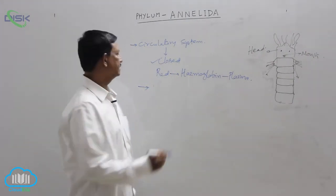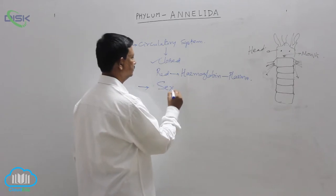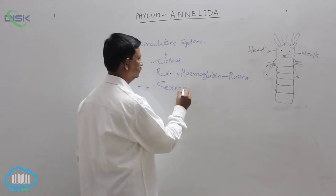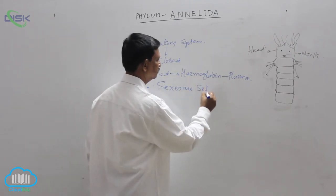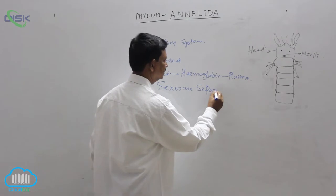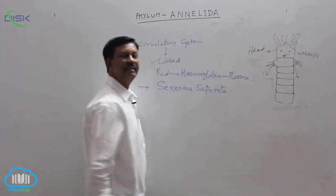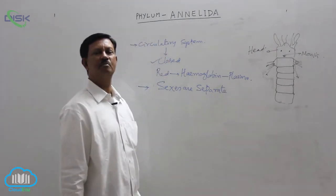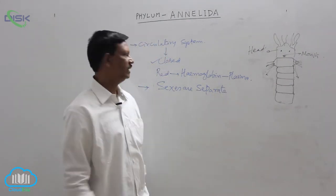Reproductive system. Sexes are separate. They are mostly dioecious animals — male and female animals are separate.